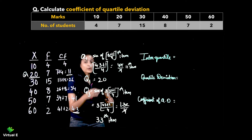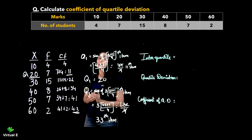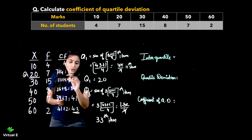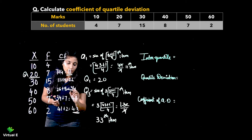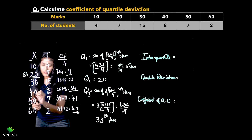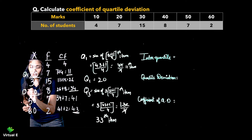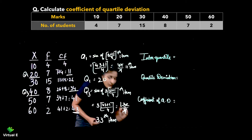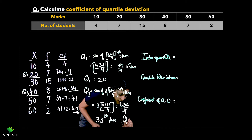Now go to the cumulative frequency — where does the 33rd item fall? It falls over here in this group. So your Q3 will be 40. The value of Q3 is 40.